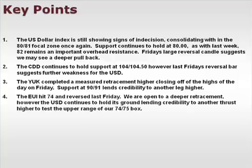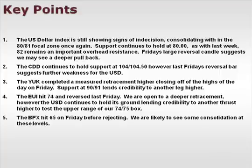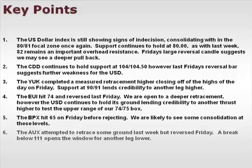The EUI hit 74 and reversed last Friday. We are open to a deeper retracement. However, the U.S. dollar continues to hold its ground, lending credibility to another thrust higher to test the upper range of our 74 to 75 box. The BPX hit 65 on Friday before rejecting. We are likely to see some consolidation at these levels. Finally, the AUX attempted to retrace some ground last week but reversed on Friday. A break below 111 opens the window for another leg lower.